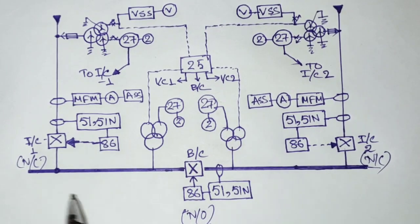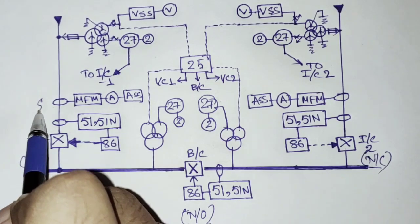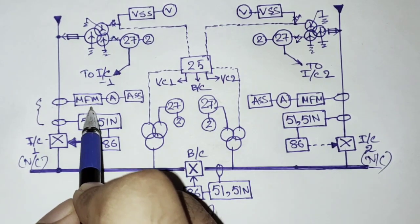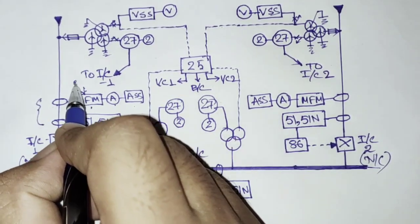This is normally closed, this is normally closed, and this is normally open. So these are the three operating conditions. Now here you can see that the metering protection SLD includes something like this. So this is the metering CT. So from here MFM and ammeter and ammeter selector switch is connected.